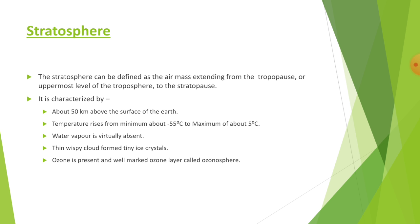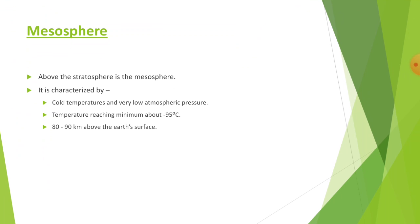Above the stratosphere is the mesosphere, characterized by cold temperatures and very low atmospheric pressure. The temperature reversal starts from the stratopause, and temperature begins to drop, reaching a minimum of about minus 95 degrees Celsius at a level some 80 to 90 kilometers above the Earth's surface. This level is termed the mesopause.